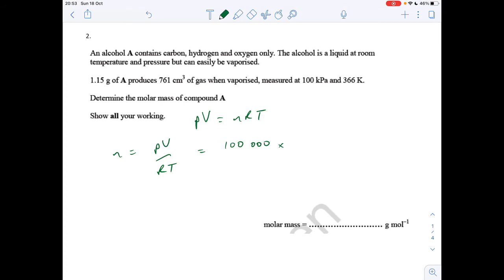761 cm cubed has to be in meters cubed, so divide by a million. I just put 10 to the minus 6 at the end. Divided by R, 8.314, multiplied by temperature, which has to be in Kelvin. It is, so 366.